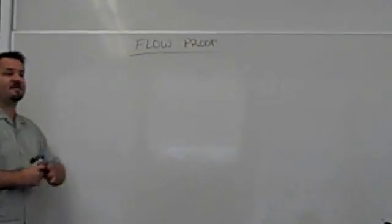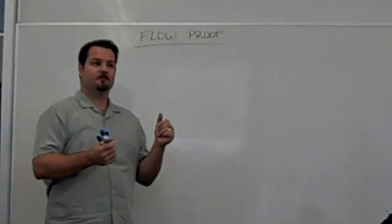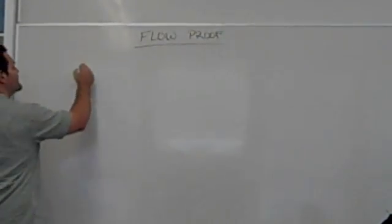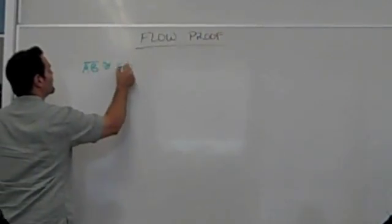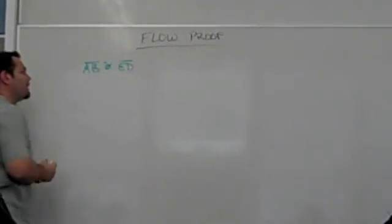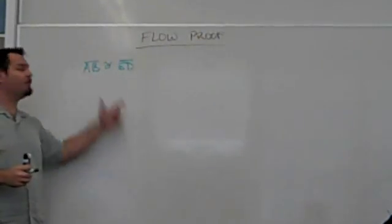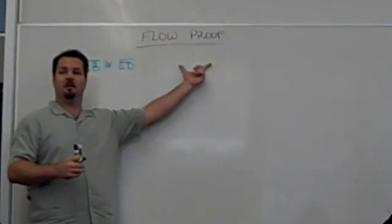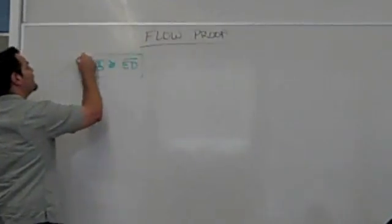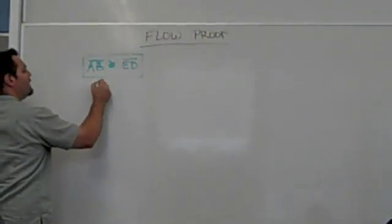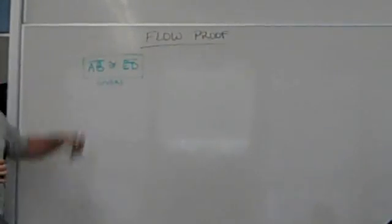It begins with the same idea. How do we start any proof? Givens. So I'm going to begin with a given: AB is congruent to ED. Now this structure is a little different. Normally I'd have a column and put my reason over here, but in this case I'm going to box this as an element and write my reason underneath it. This is like a standalone piece of the puzzle.